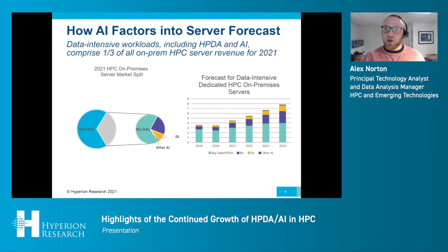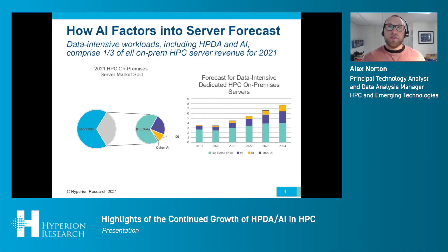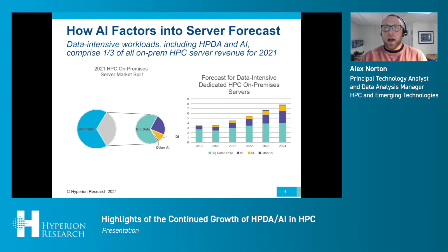There are plenty of traditional HPC sites that run a majority of mod sim applications and are also starting to run some AI, but those systems were not purchased specifically for AI. On the right of this slide, you see the forecast for data-intensive dedicated HPC servers, which includes big data, machine learning, deep learning, and other AI. As you can see, it's growing rather rapidly. The axis on the left is in billions of dollars.